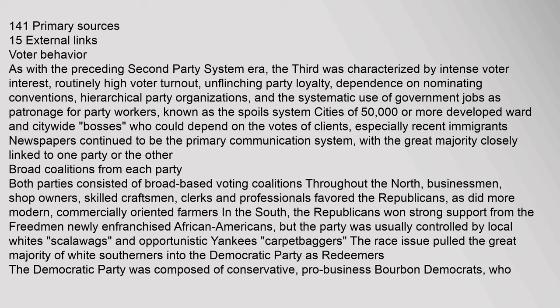Newspapers continued to be the primary communication system, with the great majority closely linked to one party or the other. Broad coalitions: Both parties consisted of broad-based voting coalitions throughout the north. Businessmen, shop owners, skilled craftsmen, clerks, and professionals favored the Republicans, as did more modern, commercially oriented farmers. In the south, the Republicans won strong support from the freedmen, newly enfranchised African Americans, but the party was usually controlled by local whites.